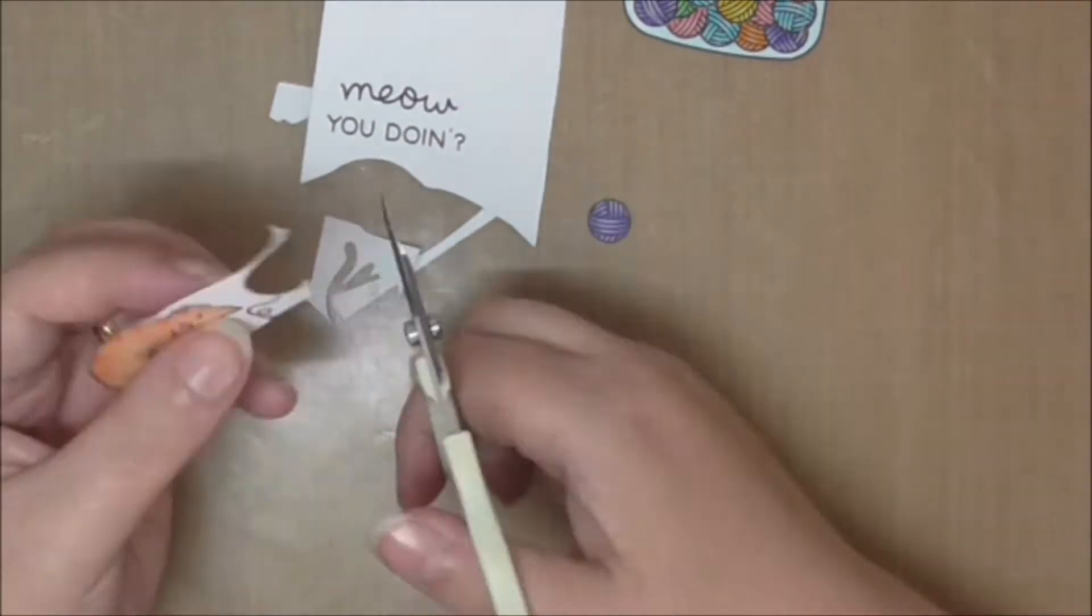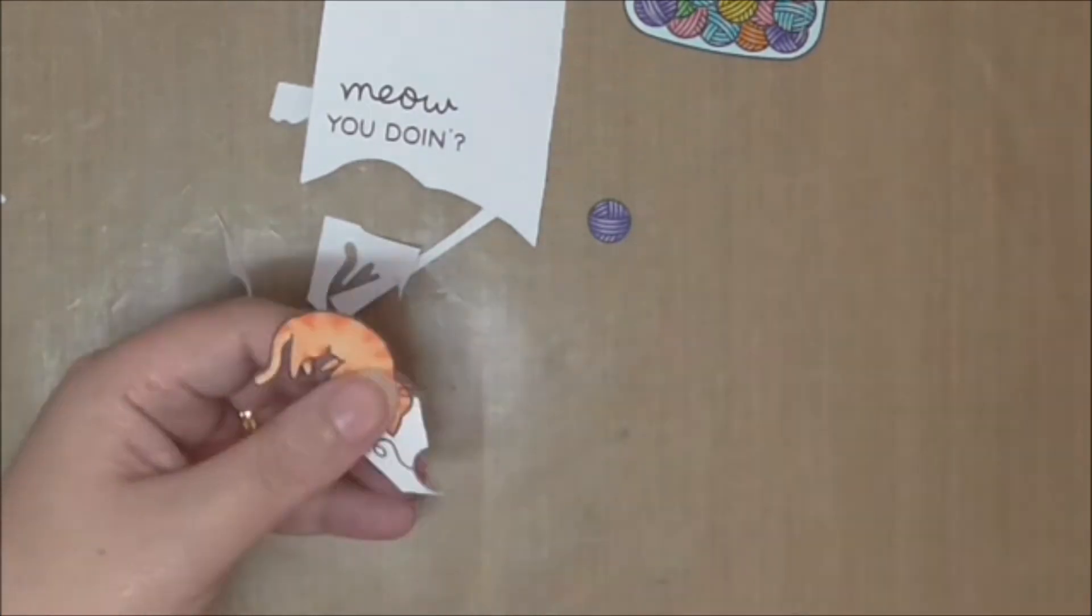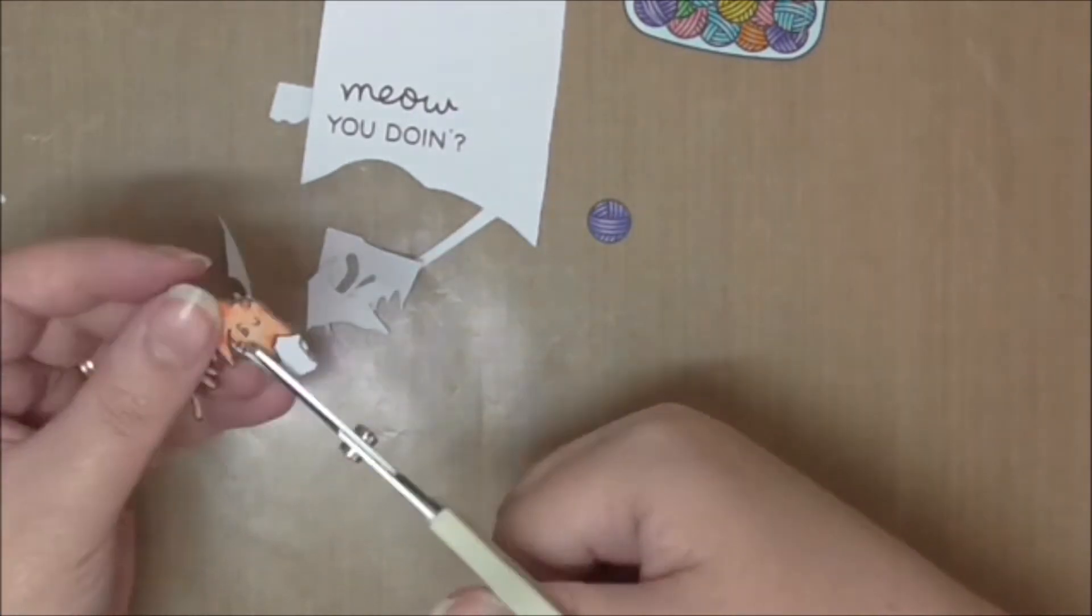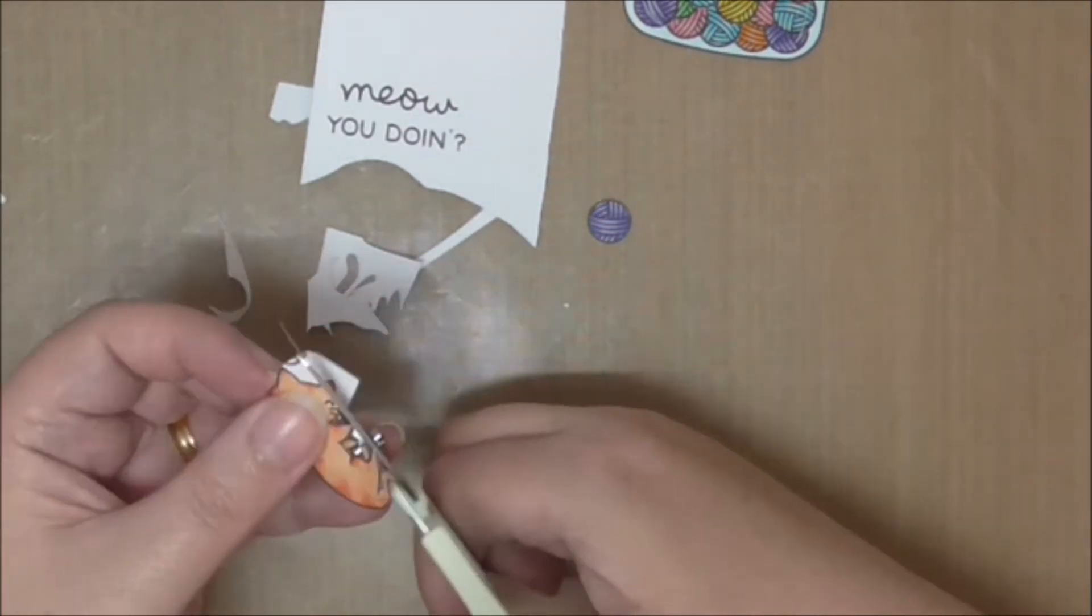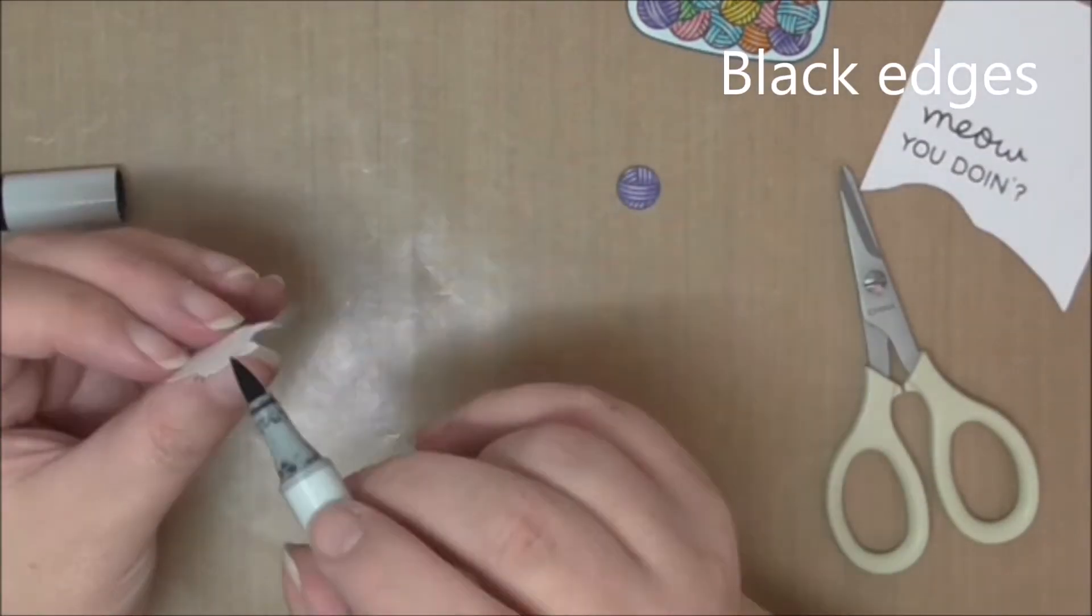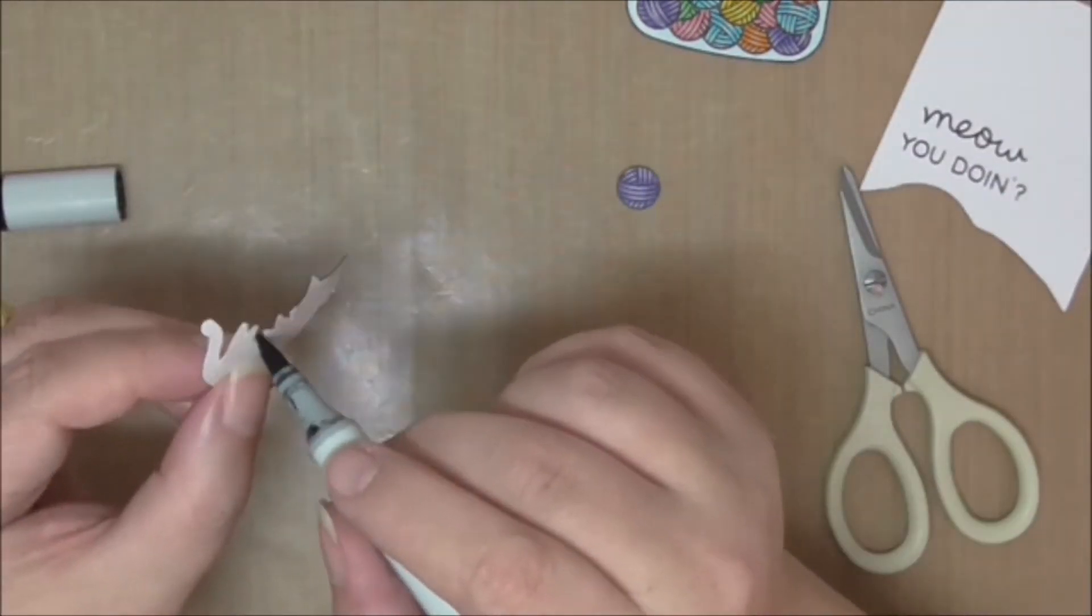Fussy cutting, oh I wish it were that fast. I did cut off the tail that I stamped on the yarn ball because I am going to pop that up on some foam tape later and it was going to be impossible to cut that tail out. I just decided that's not happening today.